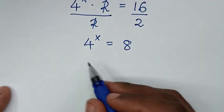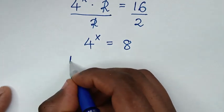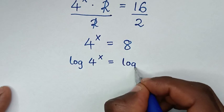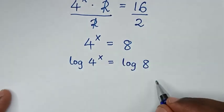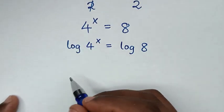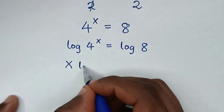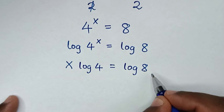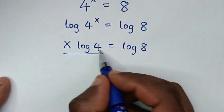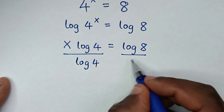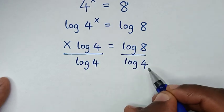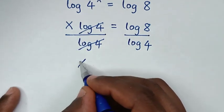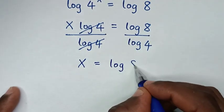Then in the next step, we apply log on both sides. So it will be log of 4 power x is equal to log of 8. Then this power x will move to the base, so it will be x times log of 4 is equal to log of 8. Then we divide by log of 4 on both sides, so log of 4 cancels, giving x is equal to log of 8 over log of 4.